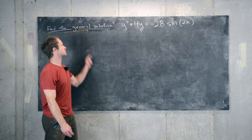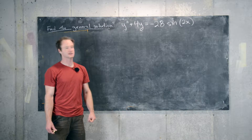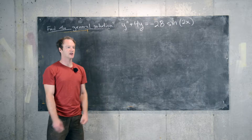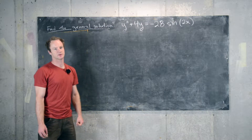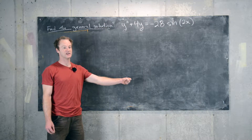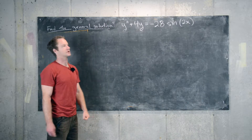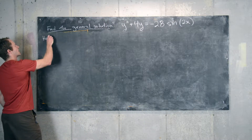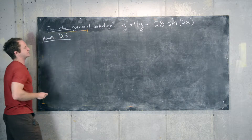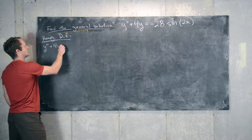In this video we're going to look at the following differential equation: y double prime plus 4y equals minus 28 times sine of 2x. Since this is a non-homogeneous second-order linear differential equation with constant coefficients, we need to find a solution to the corresponding homogeneous differential equation and a particular solution. Let's first look at the corresponding homogeneous differential equation, which is y double prime plus 4y equals 0.